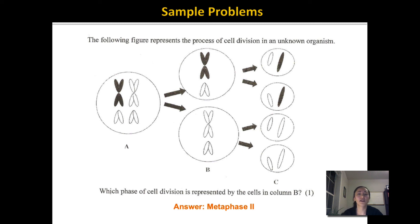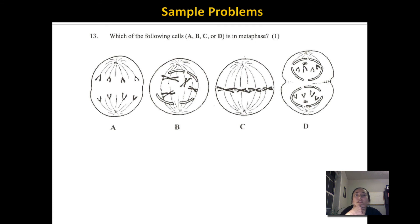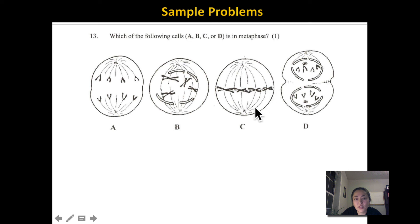Which of the following cells is in metaphase? Metaphase means middle, so we look for the cell with chromosomes lined up in the middle — that's answer C. The other options show anaphase, prophase, and telophase respectively.